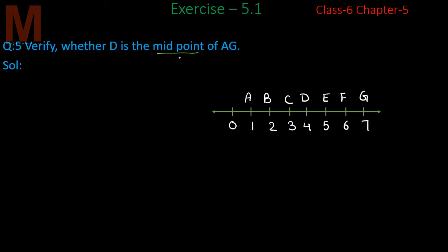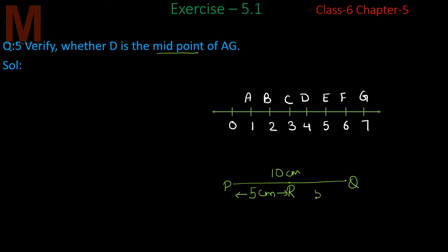Suppose we have a line with starting and end points. If its length is 10 cm, then the midpoint is the point R such that PR equals RQ — both will be 5 cm.